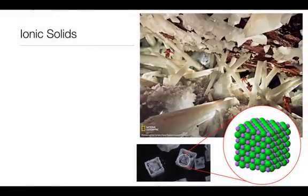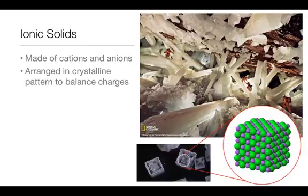Let's start off with ionic. In ionic solids, we have cations and anions attracted to each other. They're going to arrange themselves in a crystalline form. These crystals can be very small, ones that you would need to look at underneath a magnifying glass, or they could be huge, as shown in this picture from National Geographic in a cave down in Mexico.